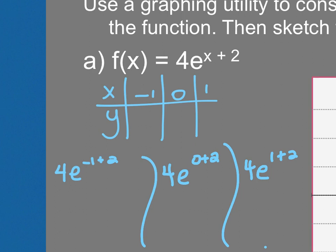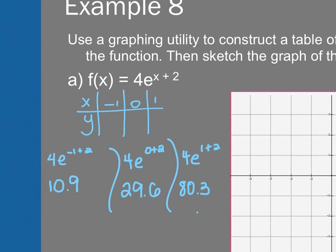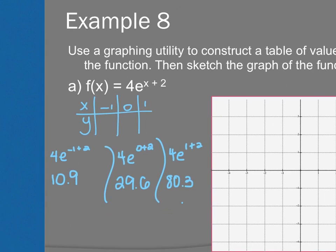And you could literally type it in just like that. You don't even have to simplify it. So 4 times e negative 1, plus 2, which is 10.9 if I round it to the nearest tenth. 4e to the 2, 29.6, and 4e to the third, 80.3. Now obviously that's not going to fit on my graph the way that it is so I'm going to adjust it. I'm going to make them each like 20 on the y. 20, 40, 60, 80.